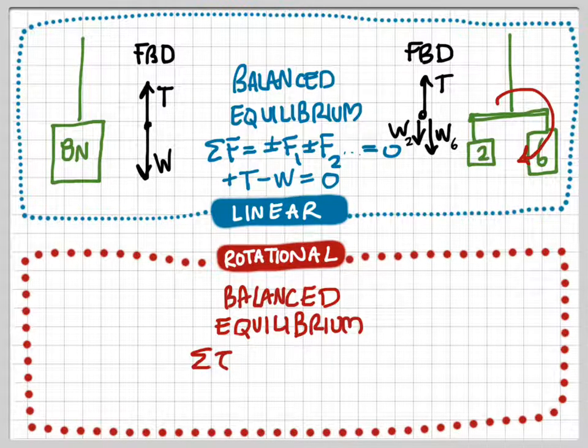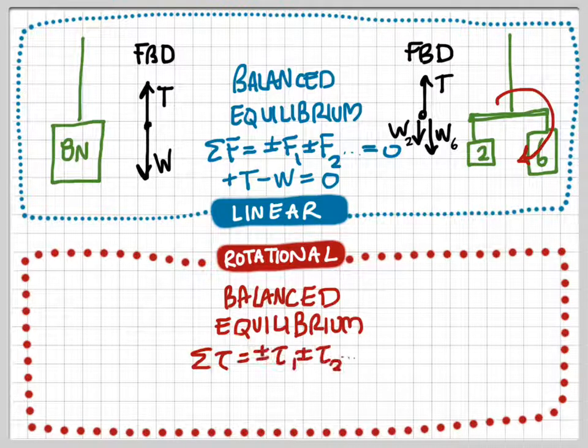So for an object to be in rotational equilibrium, the sum of the torques, in other words, plus or minus one torque, plus or minus another torque, add them all up together associated with a sign, and set them equal to zero. And the sum of the torque should be equal to zero.